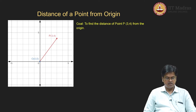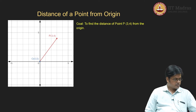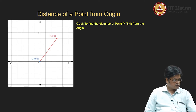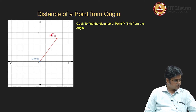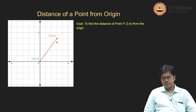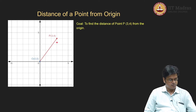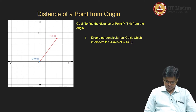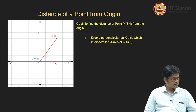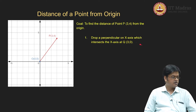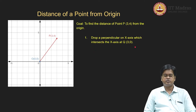Now, if the point is lying anywhere in the coordinate plane, how to find the distance is the question. If I can understand this particular position with respect to the coordinate axes, I will be able to give the answer. So let us try to get the image of this point 3 comma 4 onto the x-axis. The easiest way is to drop a perpendicular to the x-axis, which intersects the x-axis at point 3 comma 0.